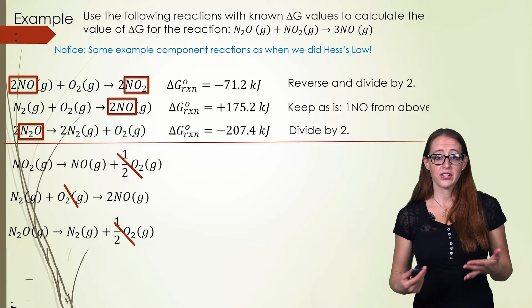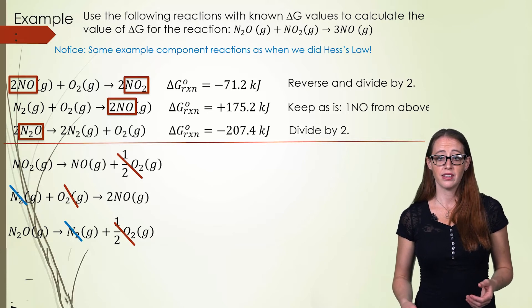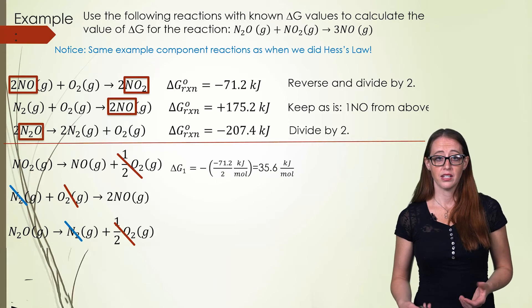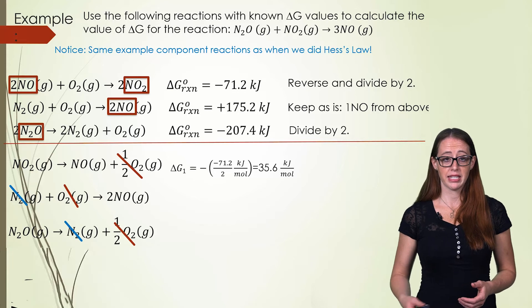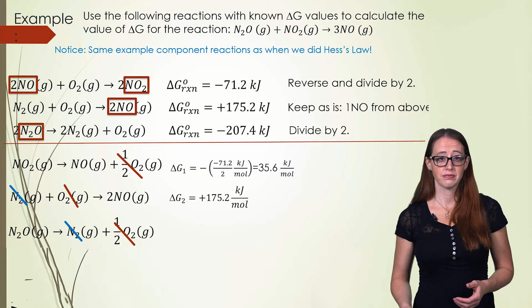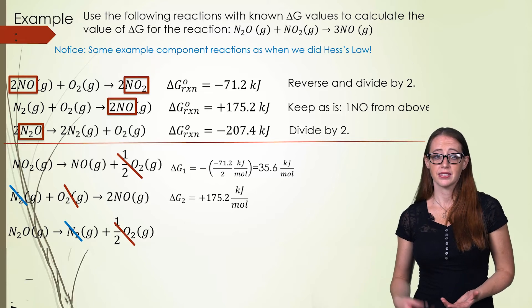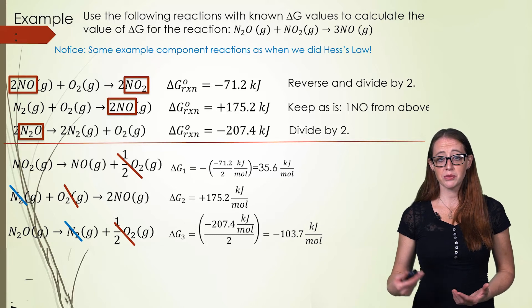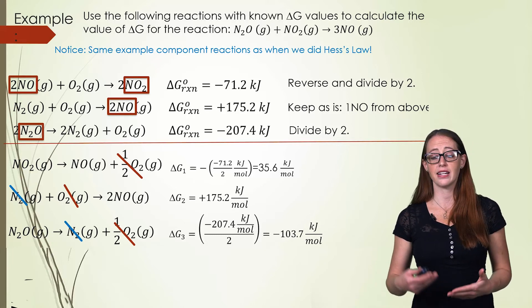Now we can see that our nitrogen and our oxygens cancel out, and all that is left is to walk through the math on the delta G to match our equations. In our first one we divide by two and make it negative. In our second one we keep it as is. In our next one we divide it by two. In our first one we flipped it and so the sign changed. In our third one we did not and so our sign stayed the same.